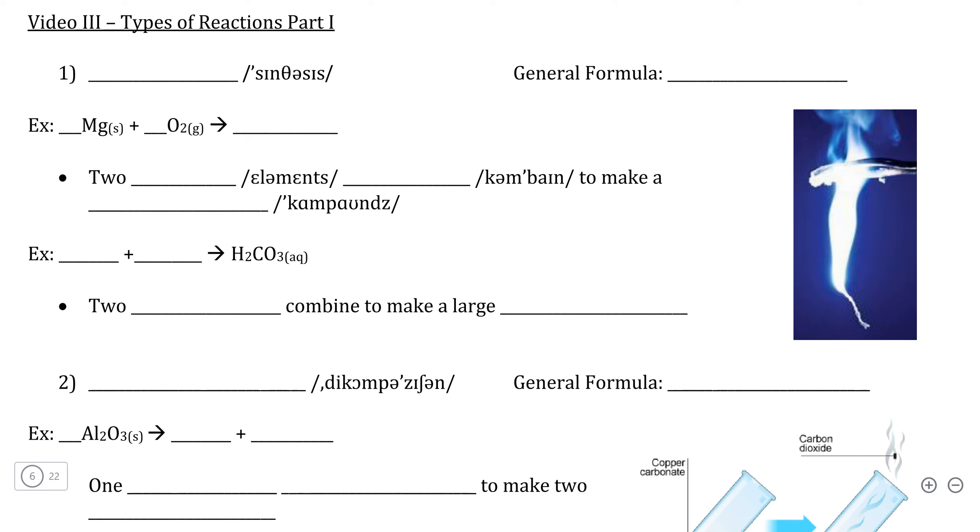One of the most important skills in the chemical reactions unit is being able to identify what type of chemical reaction is taking place. This allows us to predict the type of products that are produced by the reaction based on its type.